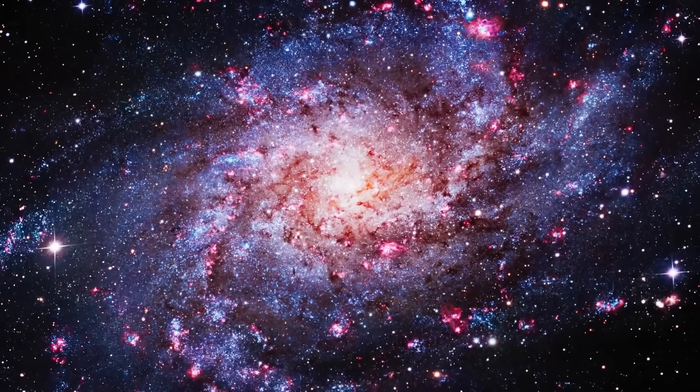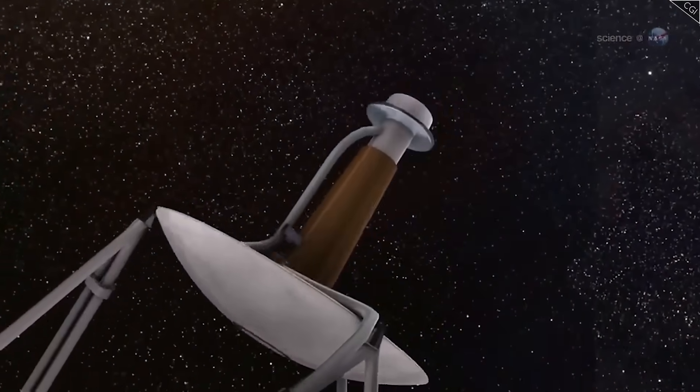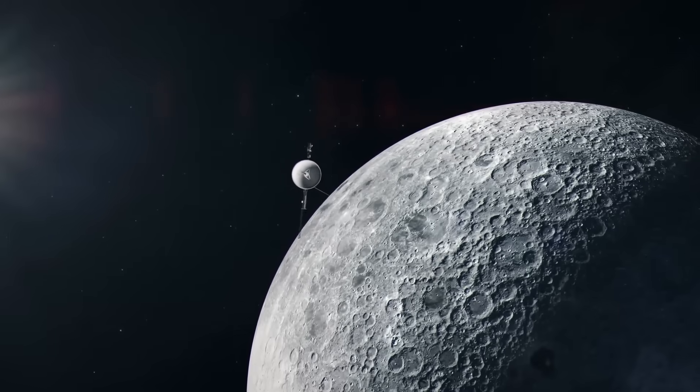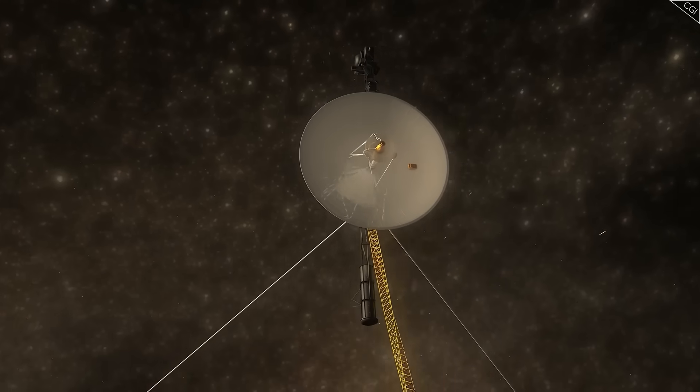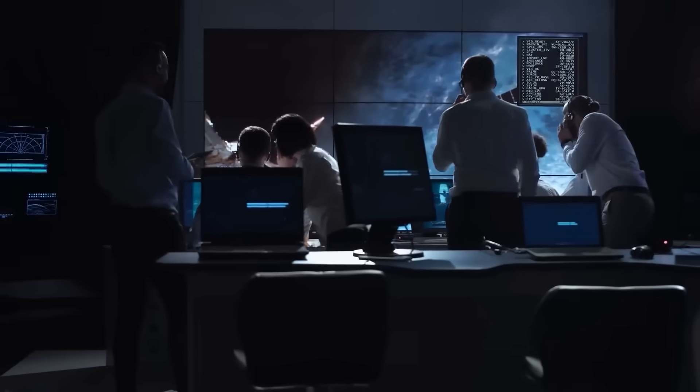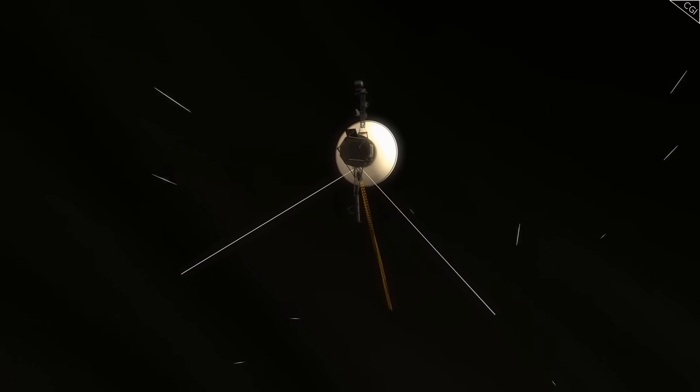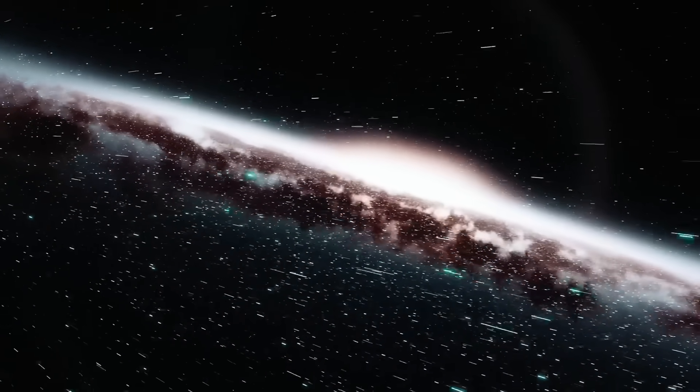Back in the early 1980s, Voyager was equipped with a high-gain antenna and transmission protocols designed to send back images and data from Saturn, Jupiter, and beyond. Those systems were never meant to last into the 2020s. Yet they did. NASA engineers have quietly admitted that minor upgrades and recalibrations have been carried out via deep space communication pulses.